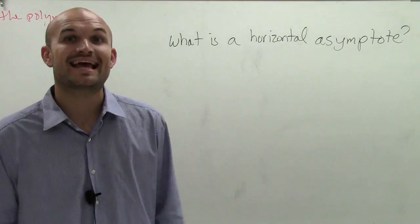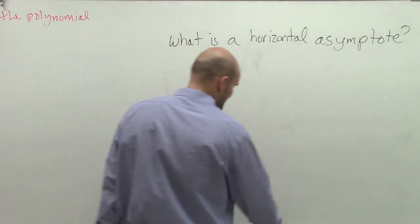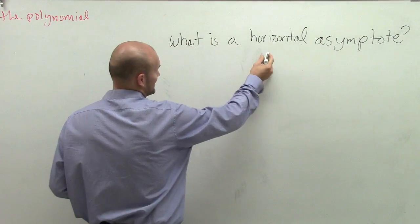All right, so what is a horizontal asymptote? Let's take a look at a graph.